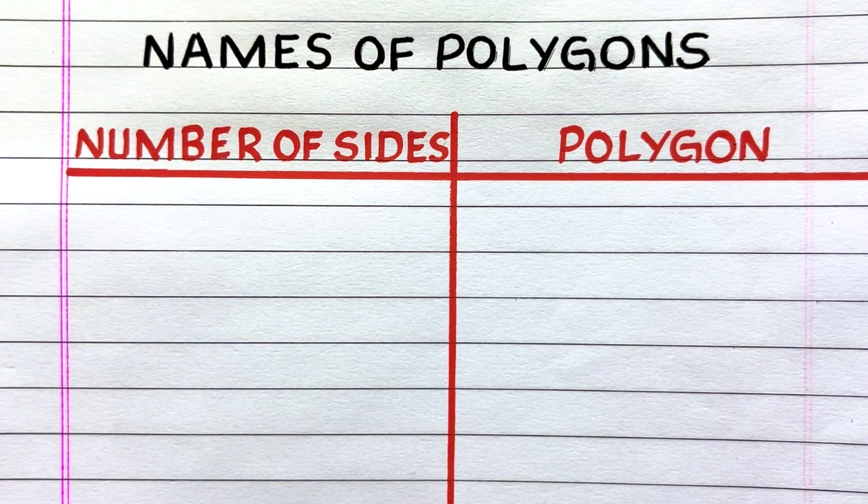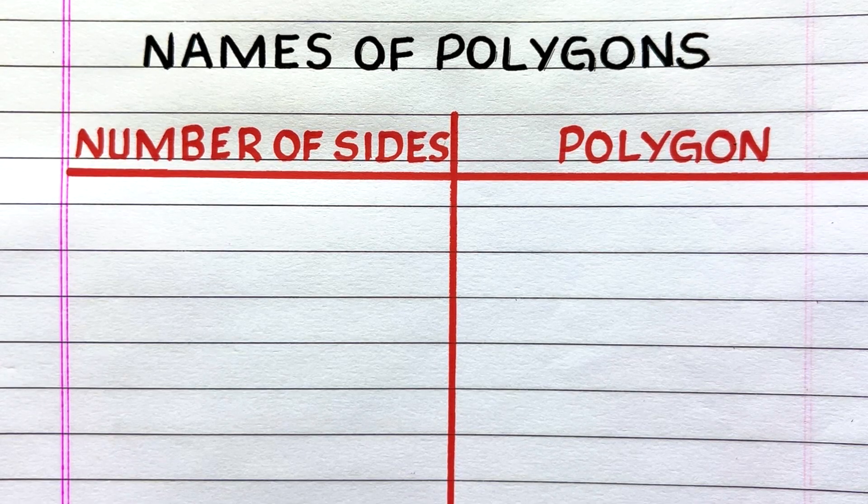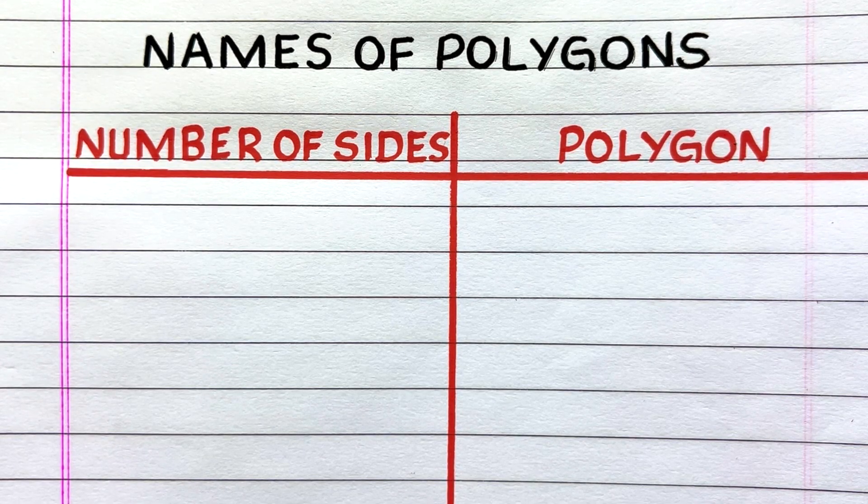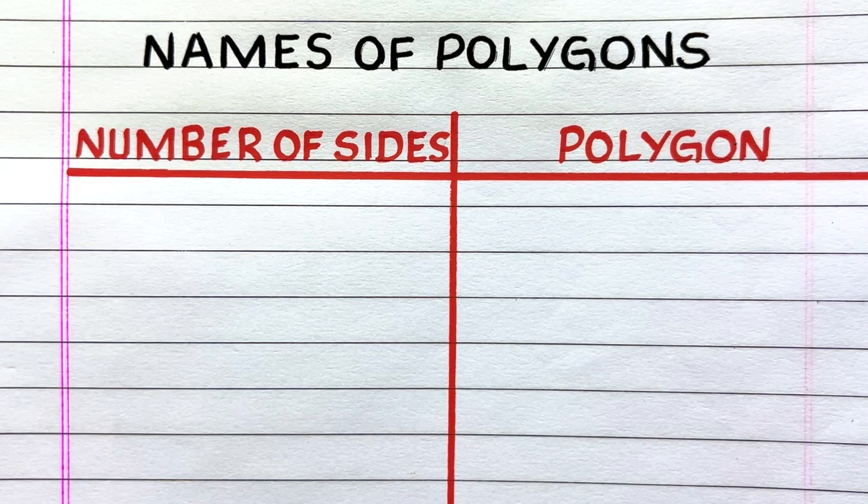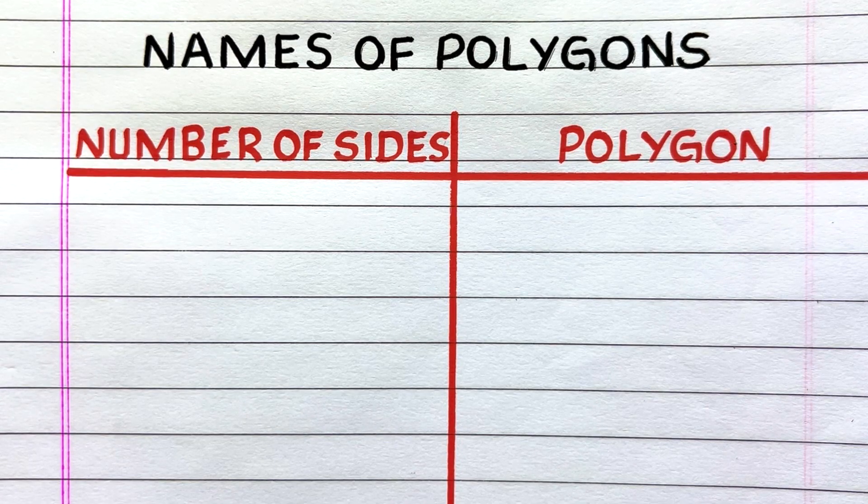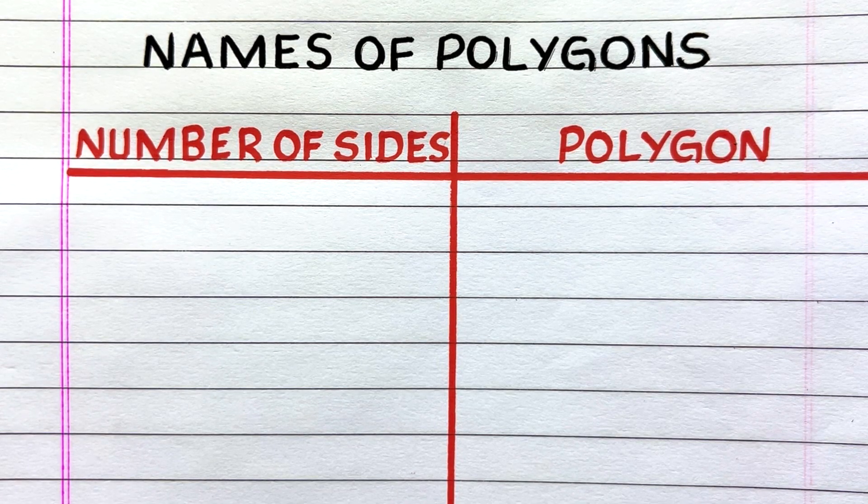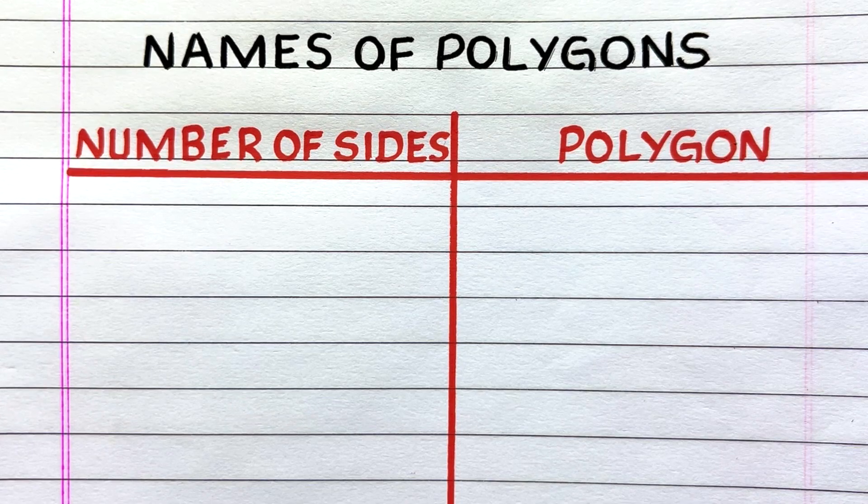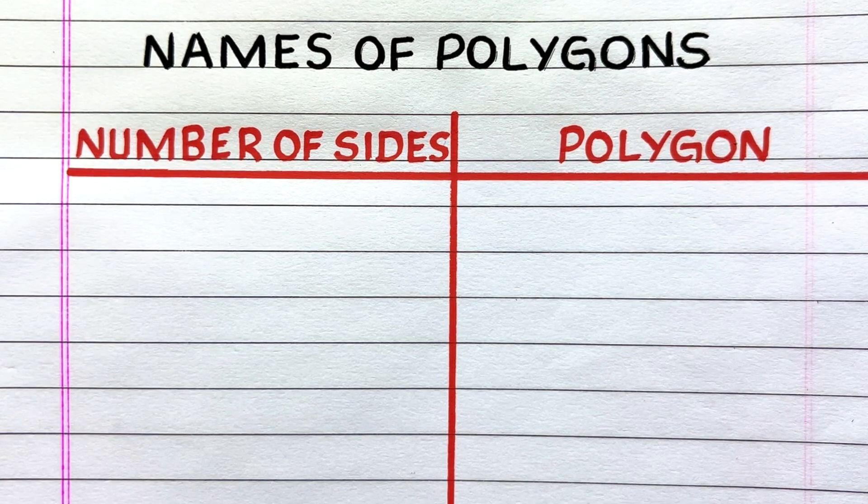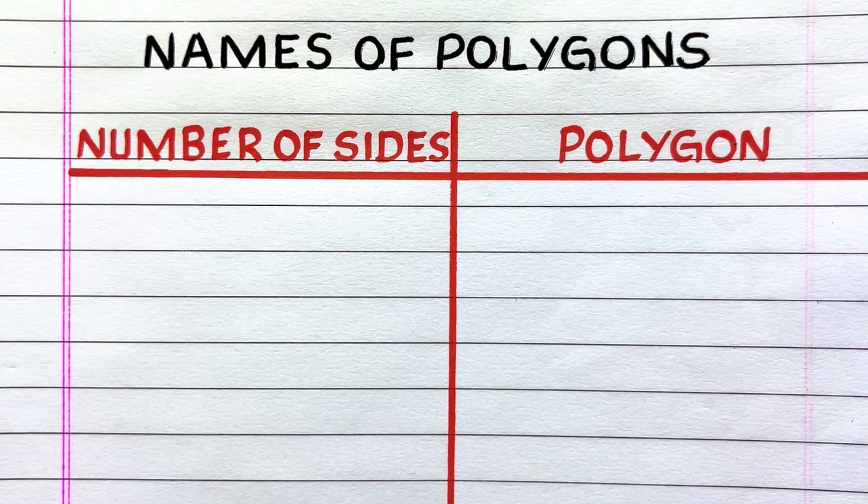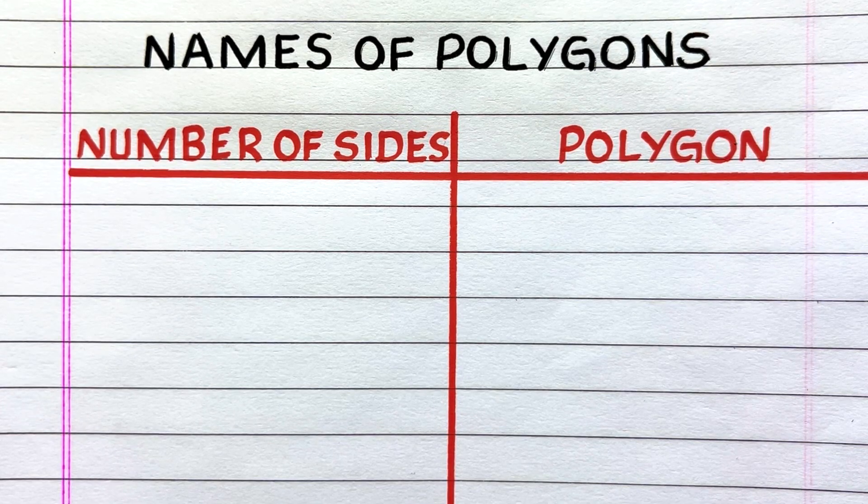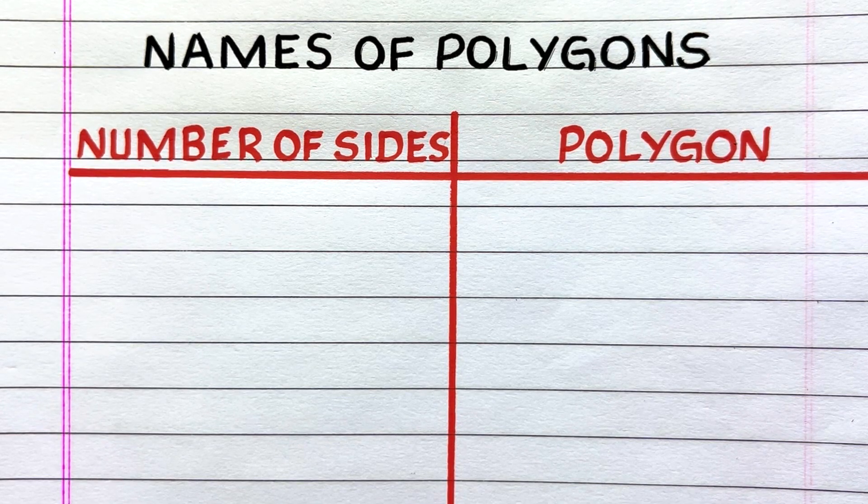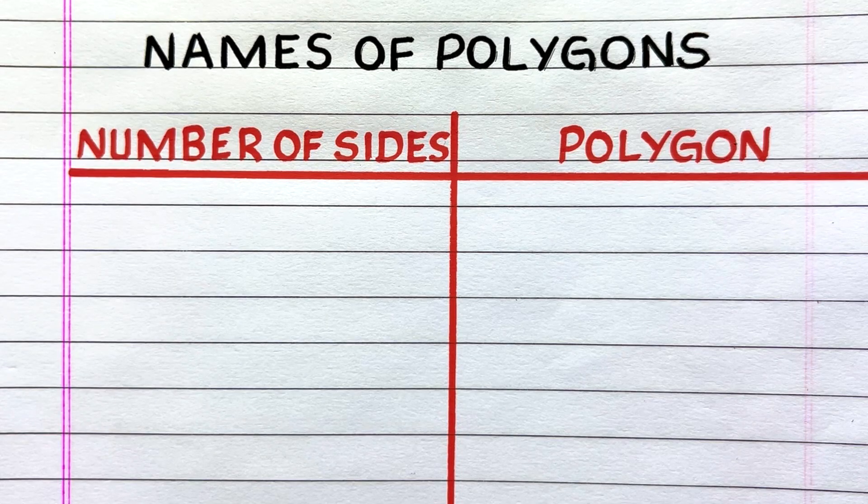Hello everyone, welcome to my channel. Polygons are defined as two-dimensional closed shapes that are formed by joining three or more line segments with each other. There are many types of polygons which are classified by the number of sides they have. In this video I'll write different types of polygons. Let's get started.